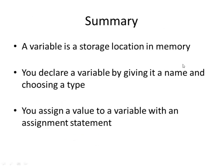So, brief summary. A variable is just a storage location in memory. You declare a variable by giving it a name and a type. And you assign a value to a variable with an assignment statement. Okay. In our next lesson, we'll talk about how to make decisions in the C programming language. See you later.